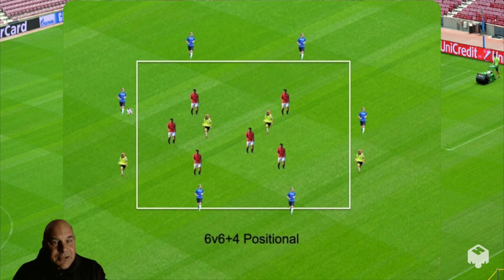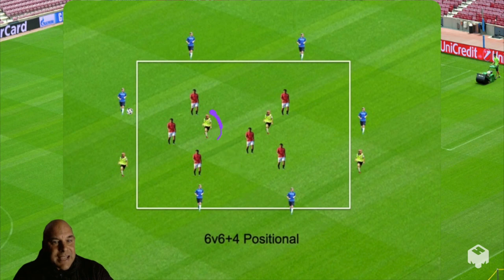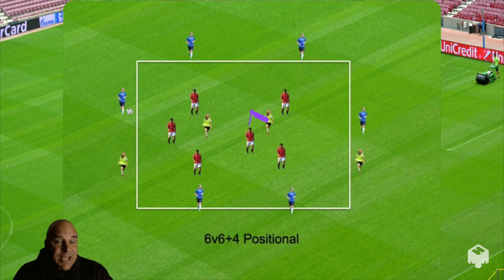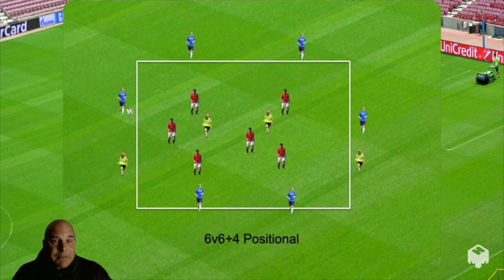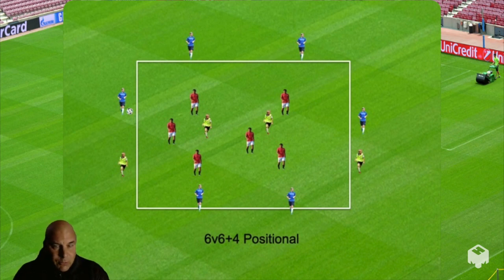Now we progress to a 6v6 plus 4, which becomes a much more complex exercise. It's harder to find space, and there's a partner in here — two players in the middle — so taking up angles, scanning, everything becomes amplified. That's the difference between a rondo with one player in the middle versus two players in the middle.